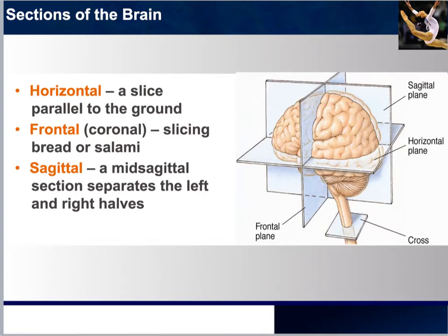The three planes are the horizontal, frontal, and sagittal. The horizontal plane is a slice cut parallel to the ground. If we take an individual standing upright and cut horizontally, we could continue slicing further and further until we slice up the entire brain in that fashion. The frontal, also known as coronal, would be slicing the brain from the top down and from left to right — you could do the same repeated slicing throughout.